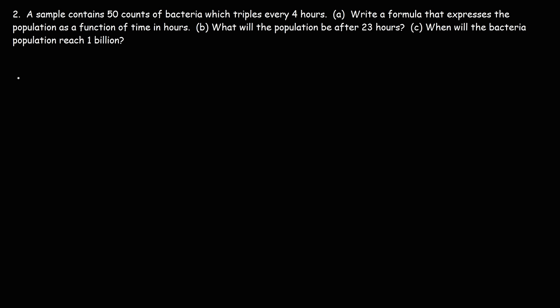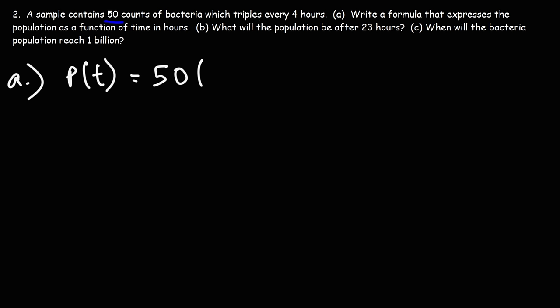Part A: we have p(t) equal to p-initial. P-initial is 50 in this problem — that's the initial amount of bacteria. Now the growth factor: it triples every 4 hours, so the growth factor is going to be 3. It's raised to t over 4, since it's every 4 hours. Since the 4 is in hours, t has to be in hours as well. So the answer is 50 times 3 raised to the t over 4.